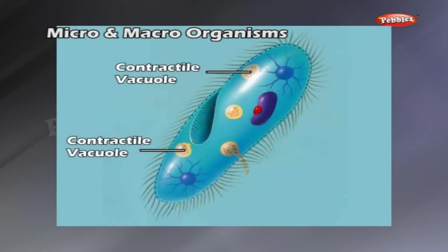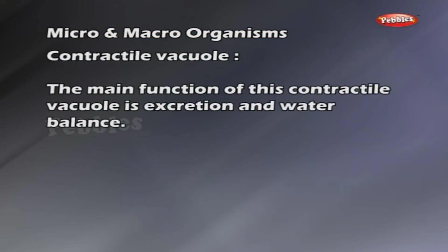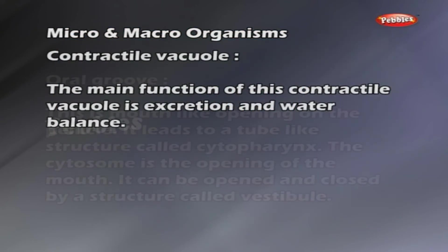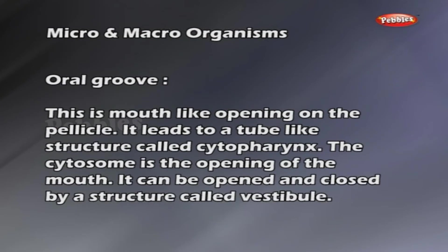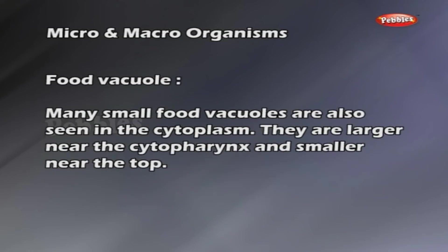Contractile vacuole: there are two contractile vacuoles. Each one is a spherical body surrounded by 6 to 10 radiating canals. The main function is excretion and water balance. Oral groove: this is a mouth-like opening on the pellicle. It leads to a tube-like structure called the cytopharynx. The cytosome is the opening of the mouth, which can be opened and closed by a structure called the vestibule.